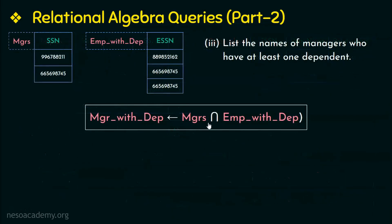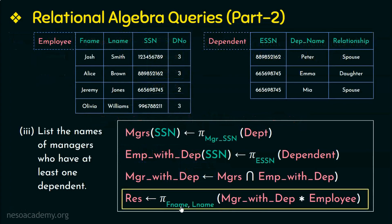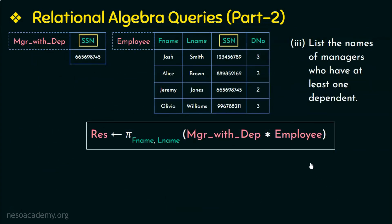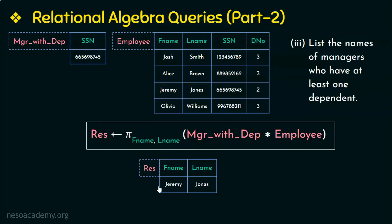The result of this intersection operation contains tuples present in both relations. There is only one SSN common to both, so that SSN is stored in the result relation — giving us the SSN of the manager having at least one dependent. To get the name of that manager, we join this relation with the employee relation as the last step. The join attribute is SSN; there is only one matching SSN, so that tuple is the natural join result. Projecting first name and last name, we find that Jeremy Jones is the only manager with at least one dependent.